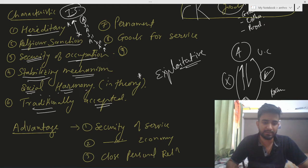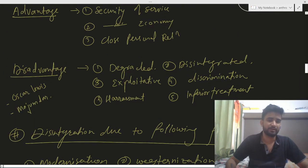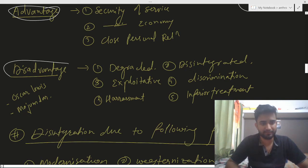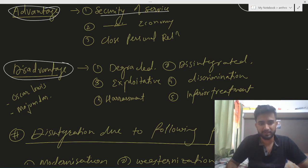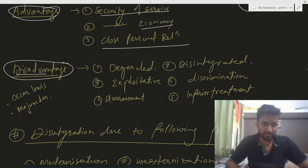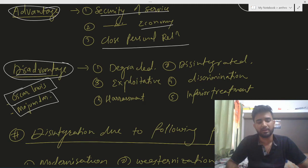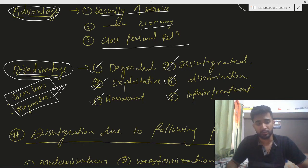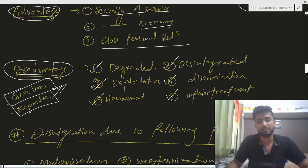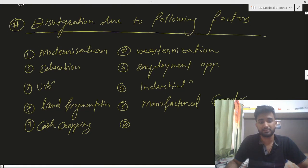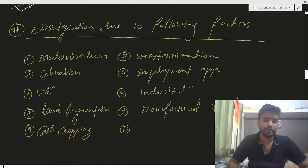The jajmani system is traditionally accepted, which is also one of its worst aspects. Advantages include security of service, security of economy, and close personal relationships. Disadvantages: scholars Mazumdar and Oscar Levy concluded the jajmani system is degraded, disintegrated, exploitative, discriminative, and involves harassment and inferior treatment of lower castes.